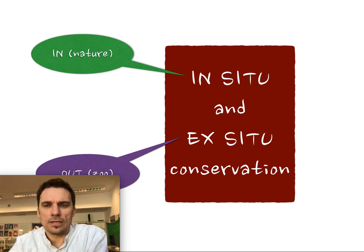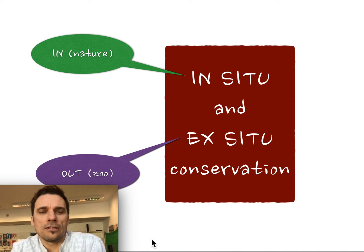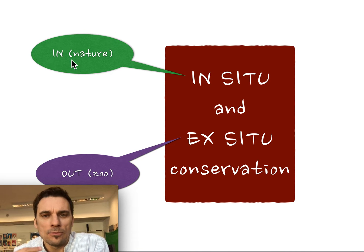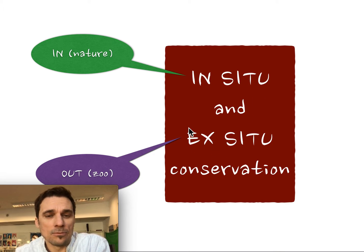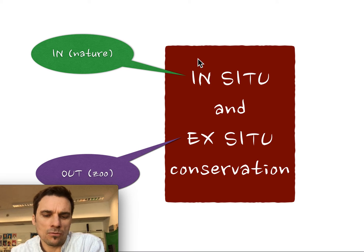We'll look at just two more things: the difference between in-situ and ex-situ conservation. If you're an IB student doing an internal assessment in biology, environmental systems and societies, or world studies, in-situ and ex-situ conservation has a lot of potential. In-situ conservation means protecting that animal in its natural habitat — in situ, in its site. Ex-situ means taking it outside of its habitat to protect it, for example in a zoo. In an ideal world, in-situ conservation is all we would need — we wouldn't need zoos to protect gene pools of animals.